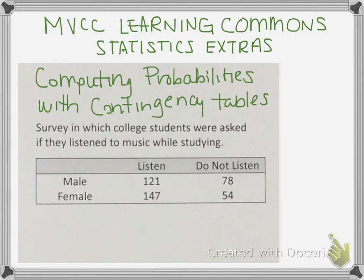To begin, before we can start answering questions, we have to first find totals of the rows and the columns. So I'm first going to find totals of the columns. I'm going to make a note of that at the bottom. I'm going to first find the total of the listen column. That number will be 268. The total of the do not listen column is 132.